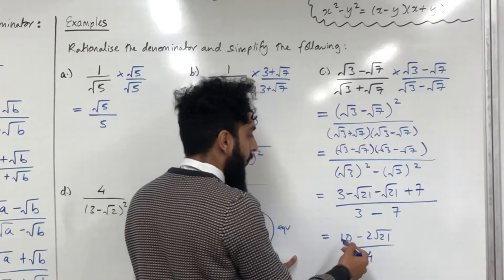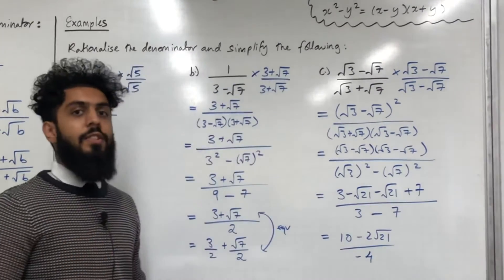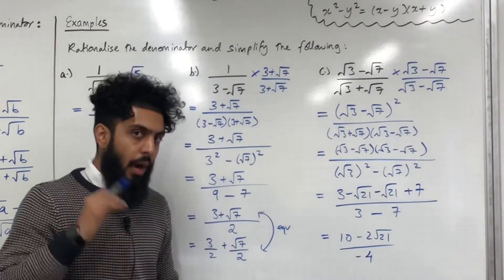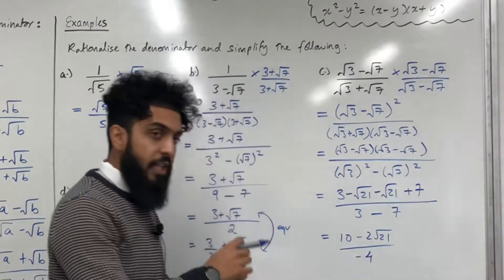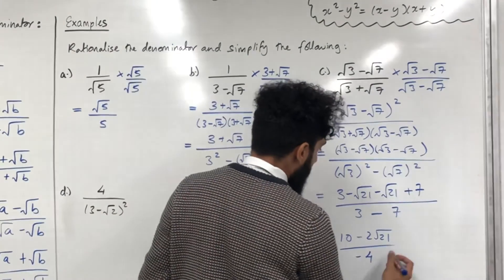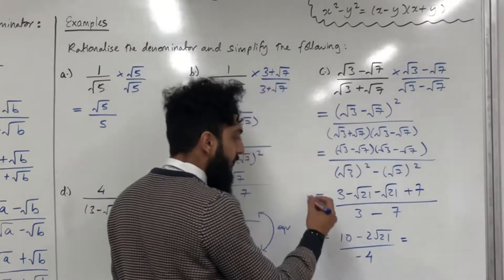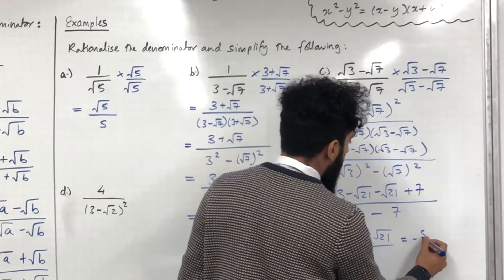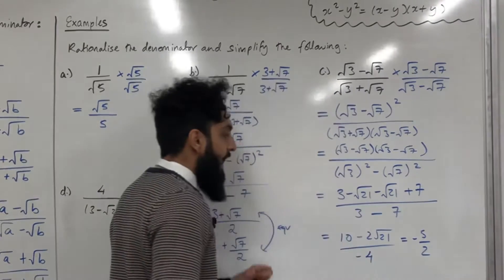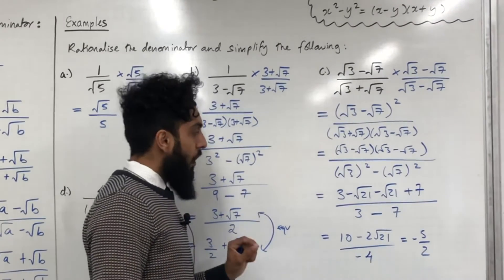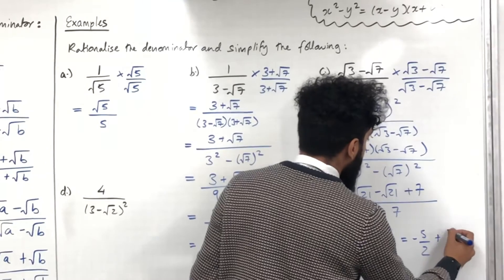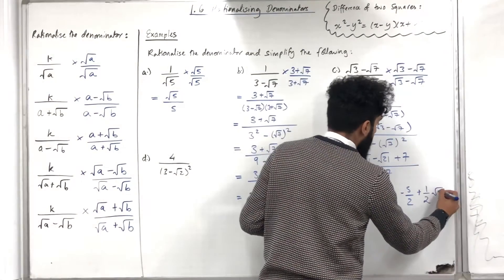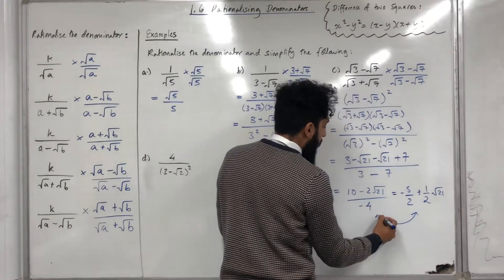This is the answer. An equivalent form comes from splitting the fraction into two parts: 10 ÷ (−4) = −5/2, and −2 ÷ (−4) = +1/2, giving −5/2 + (1/2)√21. These two answers are equivalent.